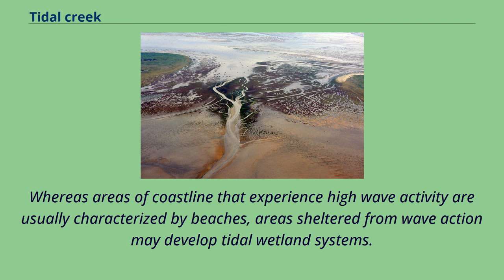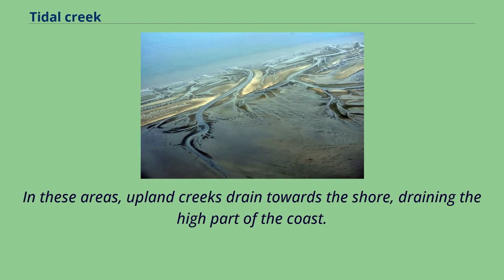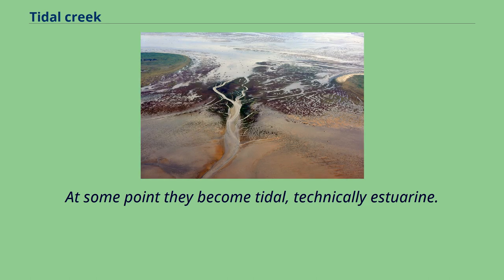Whereas areas of coastline that experience high wave activity are usually characterized by beaches, areas sheltered from wave action may develop tidal wetland systems. In these areas, upland creeks drain towards the shore, draining the high part of the coast. At some point they become tidal, technically estuarine.